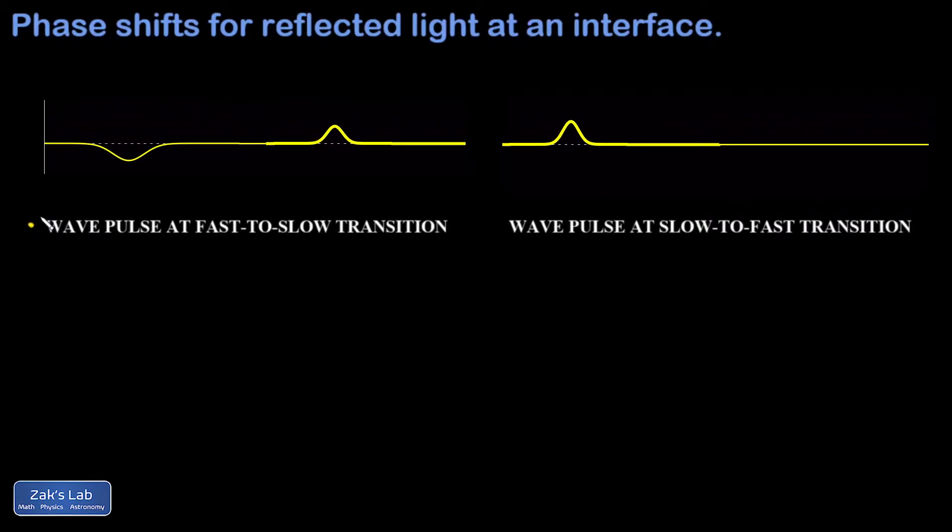We can understand the reflection of light by analogy to waves on a string, and what we see in the animation is that a wave pulse entering the transition from a faster medium to a slower medium is inverted when it gets reflected. Notice also that the wavelength becomes smaller in the slower medium, which we covered in the previous video.